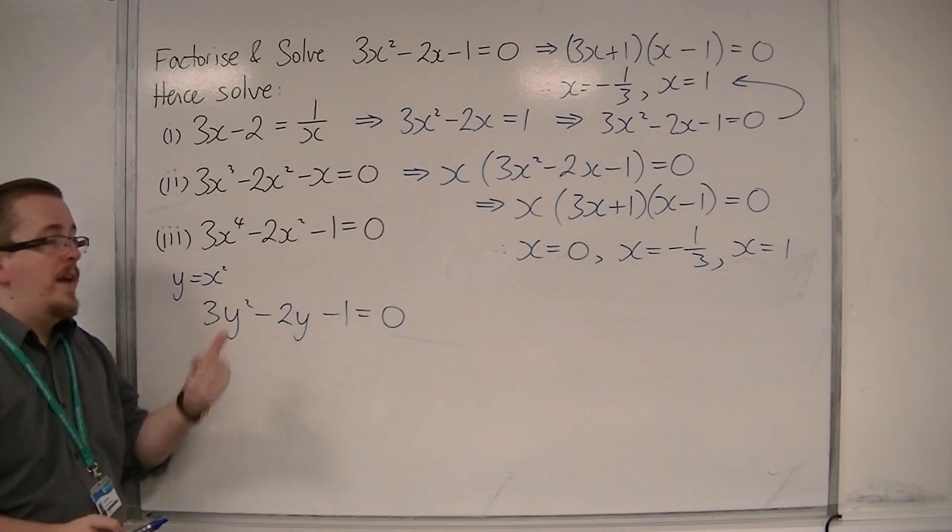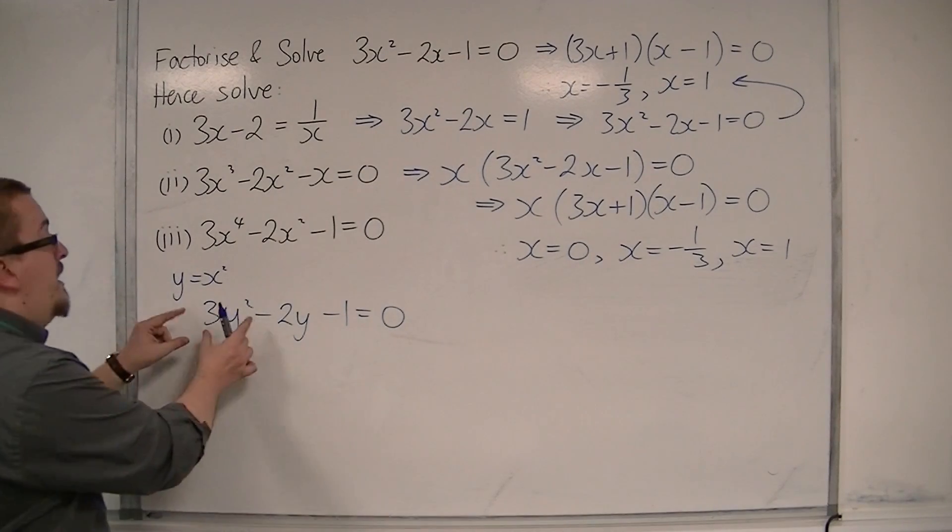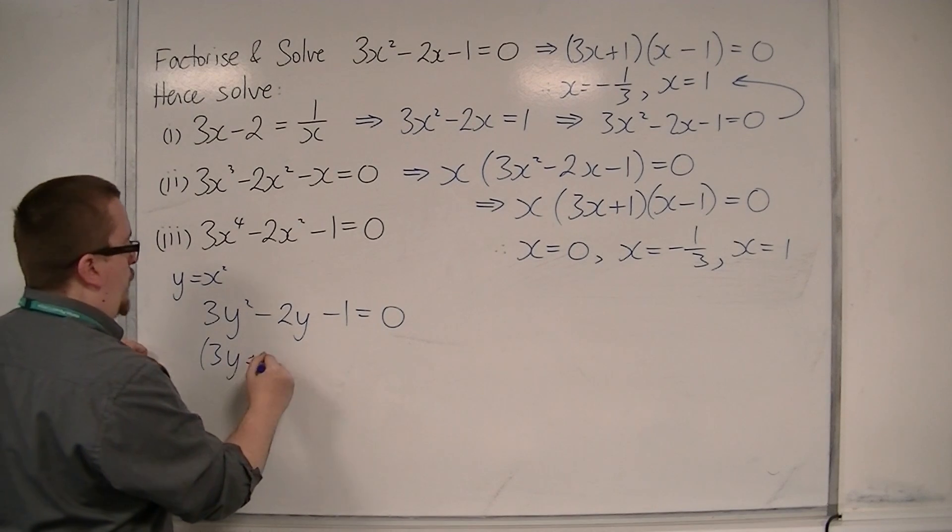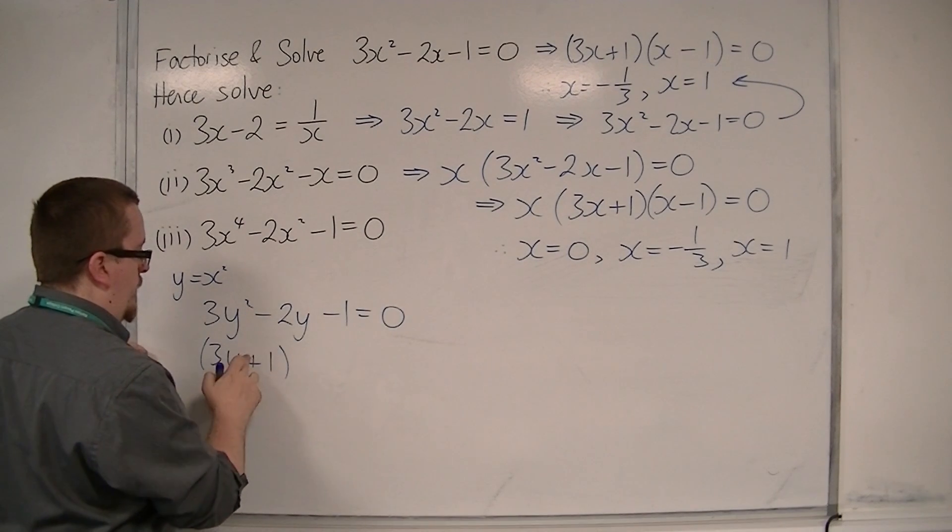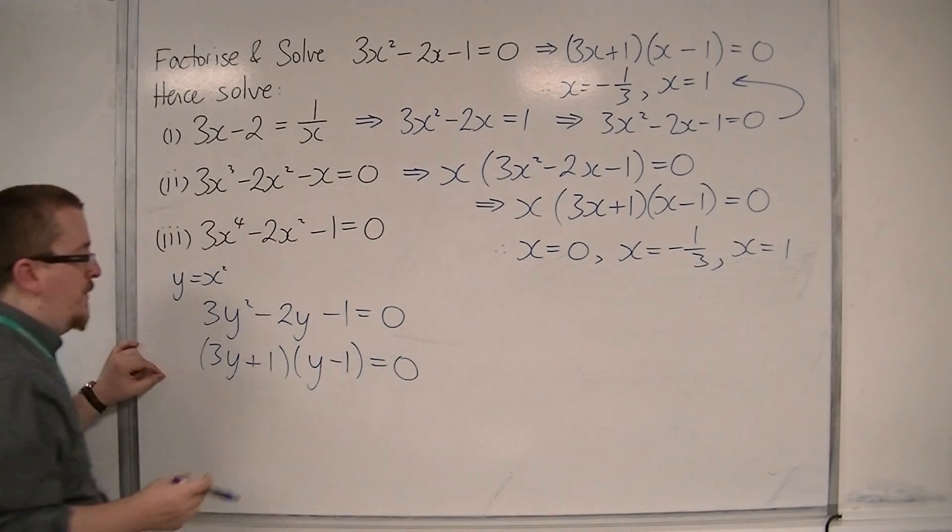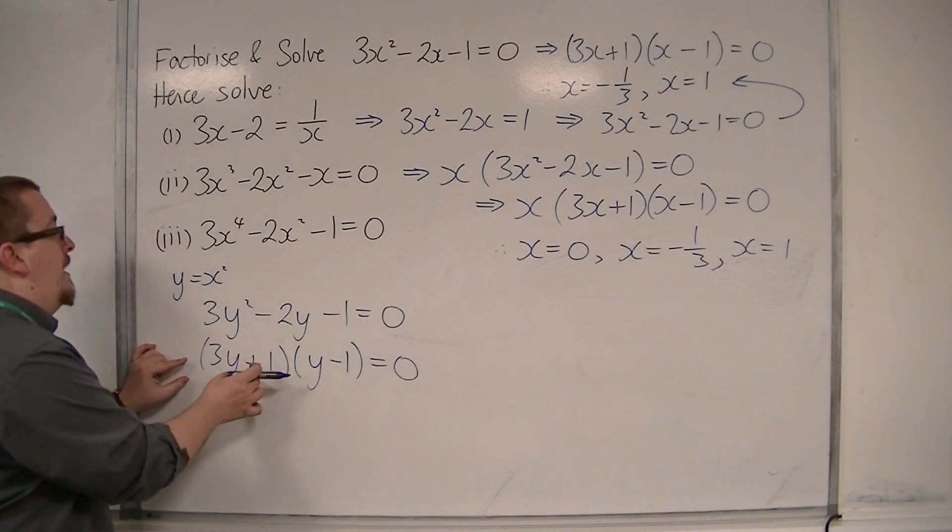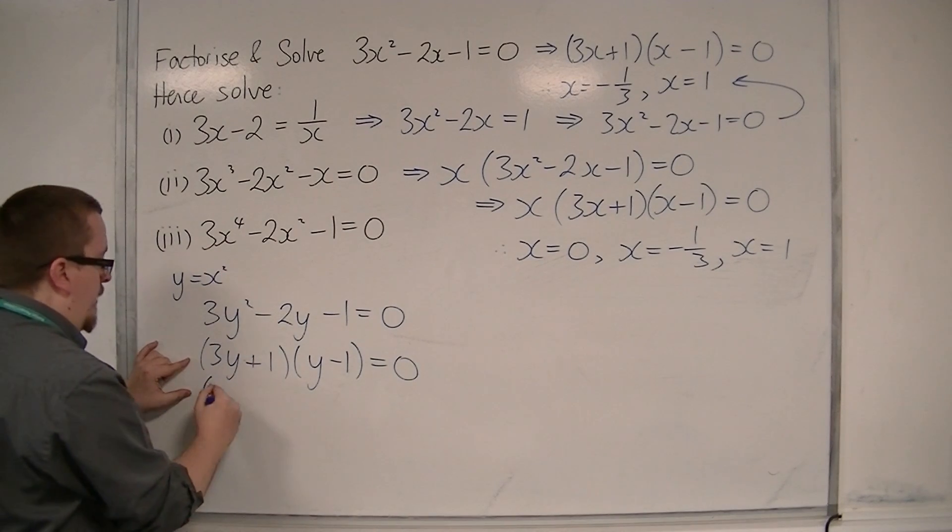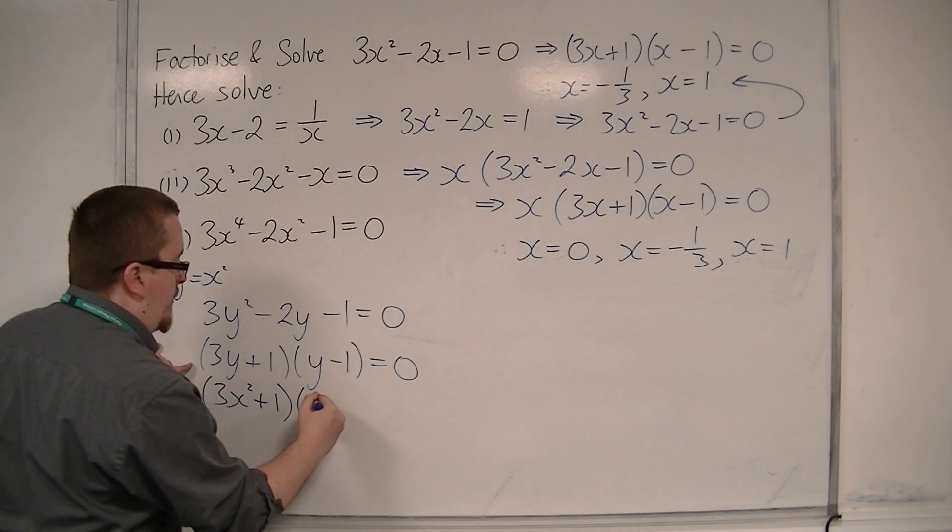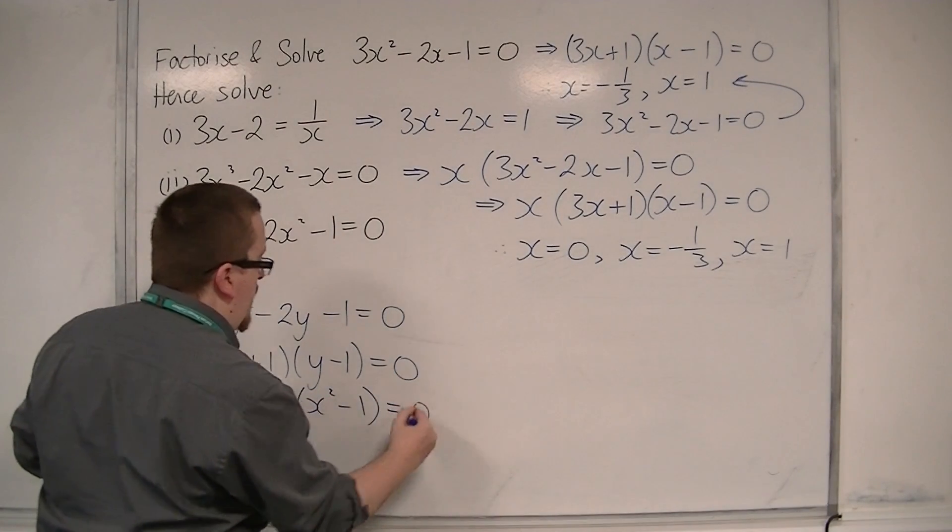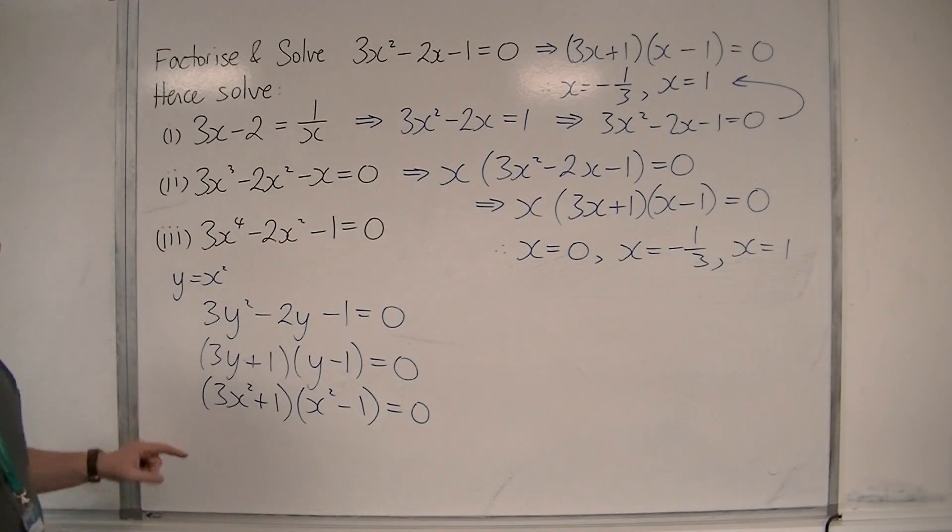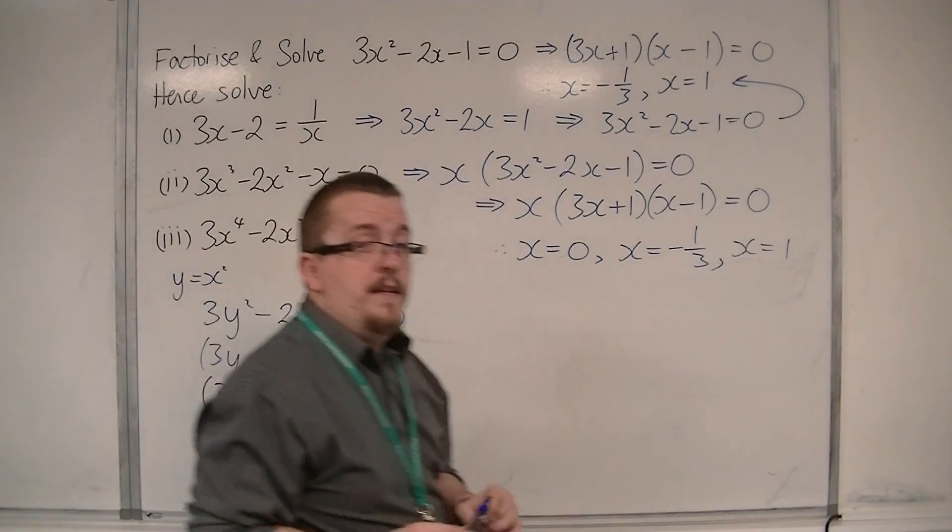What I've done is I've replaced the x squareds with y. We know that that can be factorised to 3y plus 1 and y minus 1. If you now put the y is equal to x squared back in, we have 3x squared plus 1 and x squared minus 1. You could go straight from this line to this line by factorising, if you're confident in doing it.